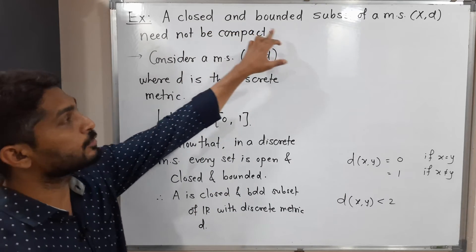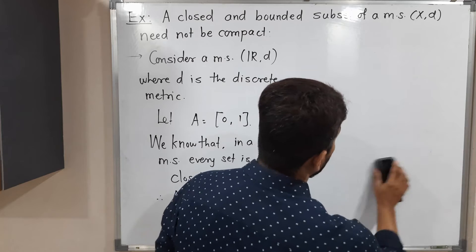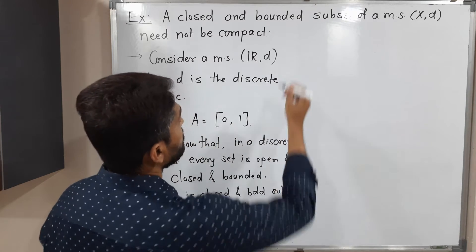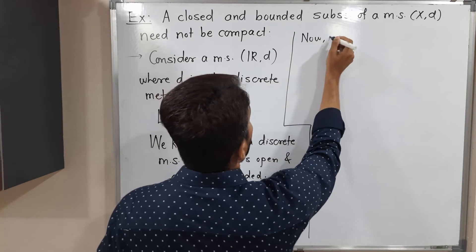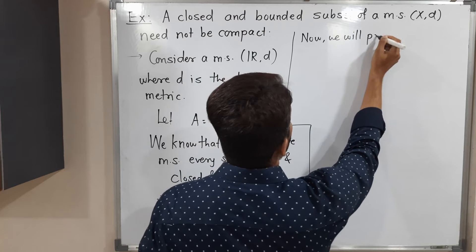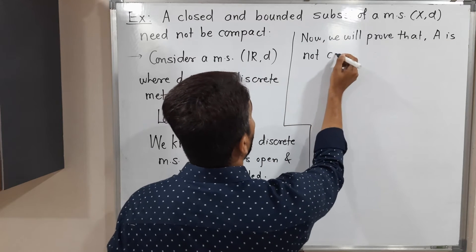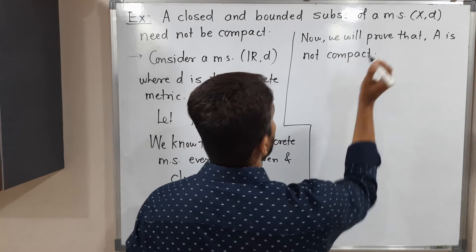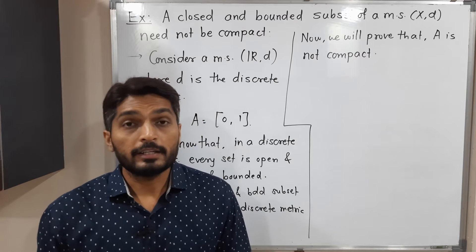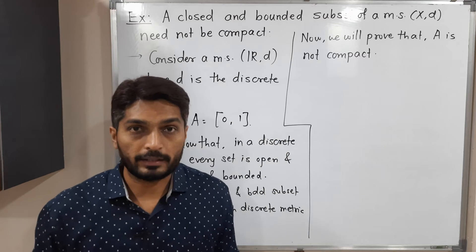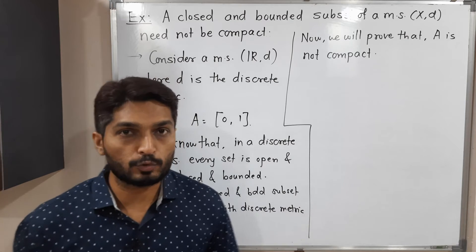So the first half is done — set A is closed and bounded. Now we have to prove that it is not compact. Recall the definition: a set is compact if every open cover has a finite subcover. Here we have to prove A is not compact, meaning we have to find an open cover which has no finite subcover. So let us find such an open cover.